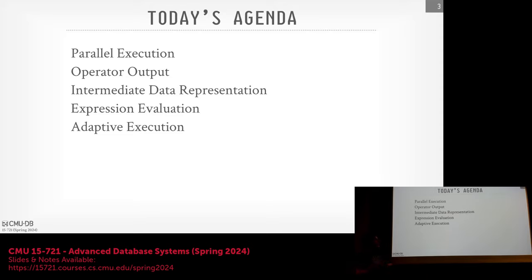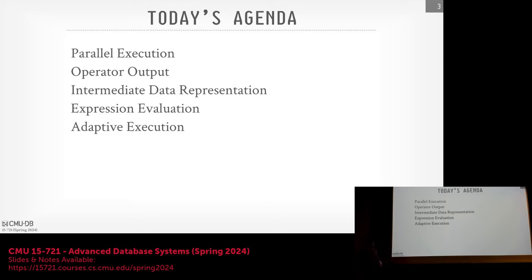Today's class continues from last time, talking about how we're going to run queries in parallel — the different types of parallelism and how to architect the system so multiple operator instances can run at the same time, either within the same query or across multiple concurrent queries. Starting next week, we'll see how to parallelize individual operators within the query plan, talk about what operator output looks like, late materialization, what data looks like going from one operator to the next — the spoiler is we'll use Arrow — and how we evaluate expressions. We'll also do a quick preview of adaptive query execution.